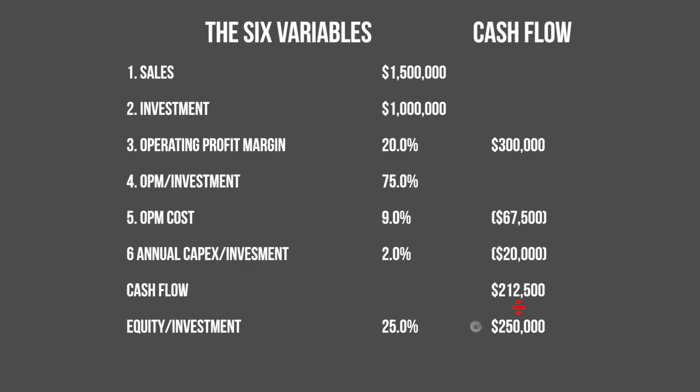You divide that into the $250,000 initial investor equity and you get a current annual rate of return of 85%.